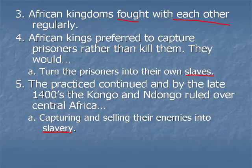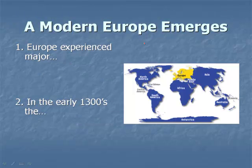We'll be looking at that in later lectures. Moving on from Africa north to Europe — this is where Spain, England, France, the Netherlands, and Portugal are all going to be. We're going to talk about them when they start colonizing the Americas.